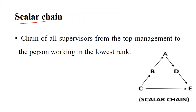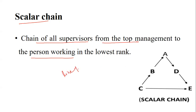The next option is scalar chain. It is a chain of all supervisors from top management to the person working at the lowest level. This is a communication item - the scalar chain provides the line of communication throughout the hierarchy.